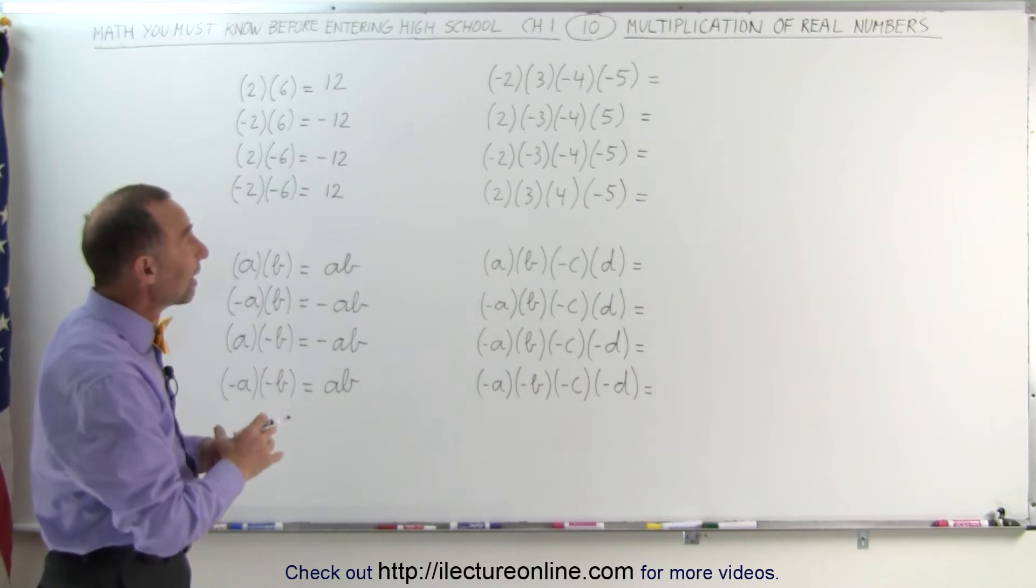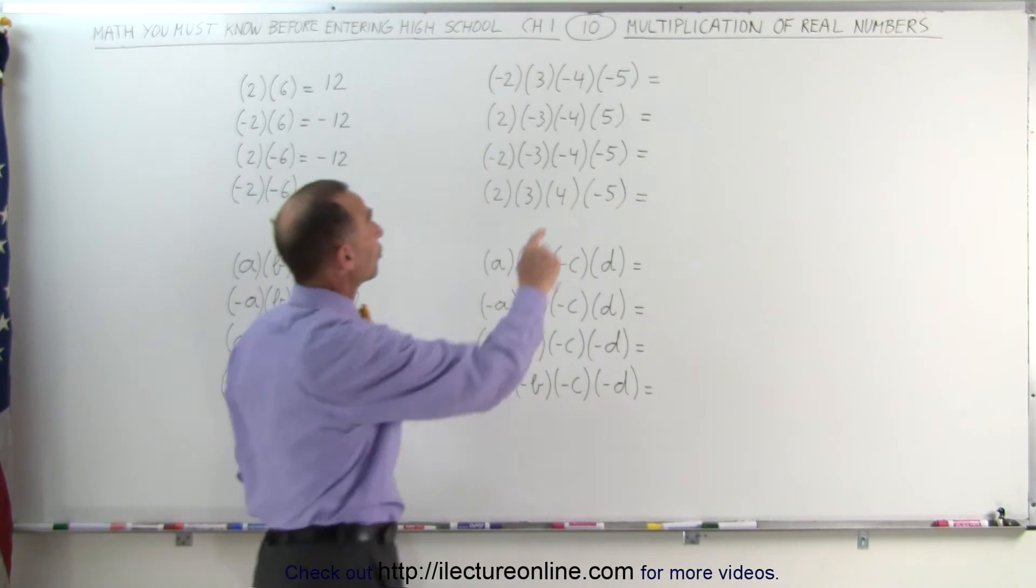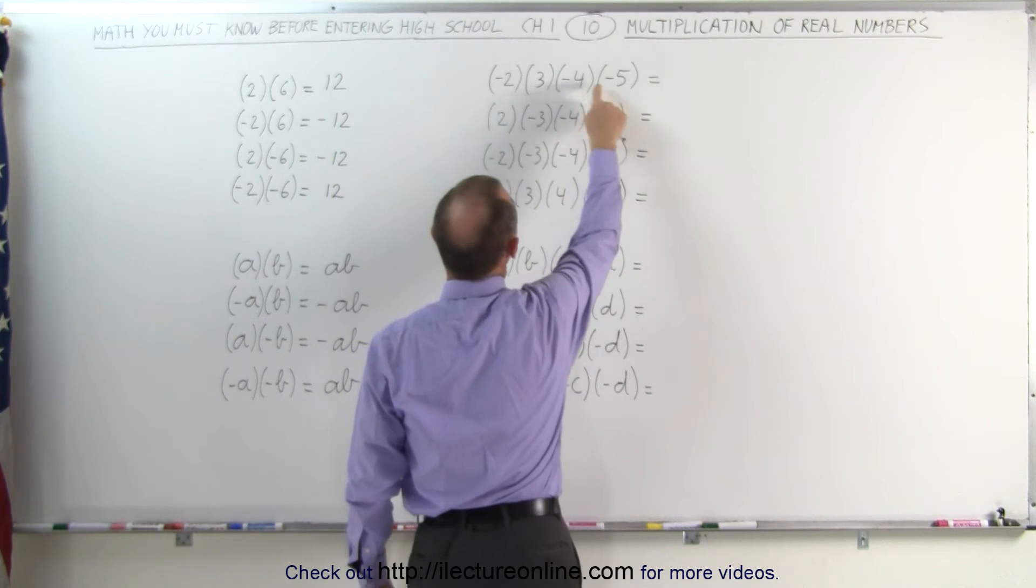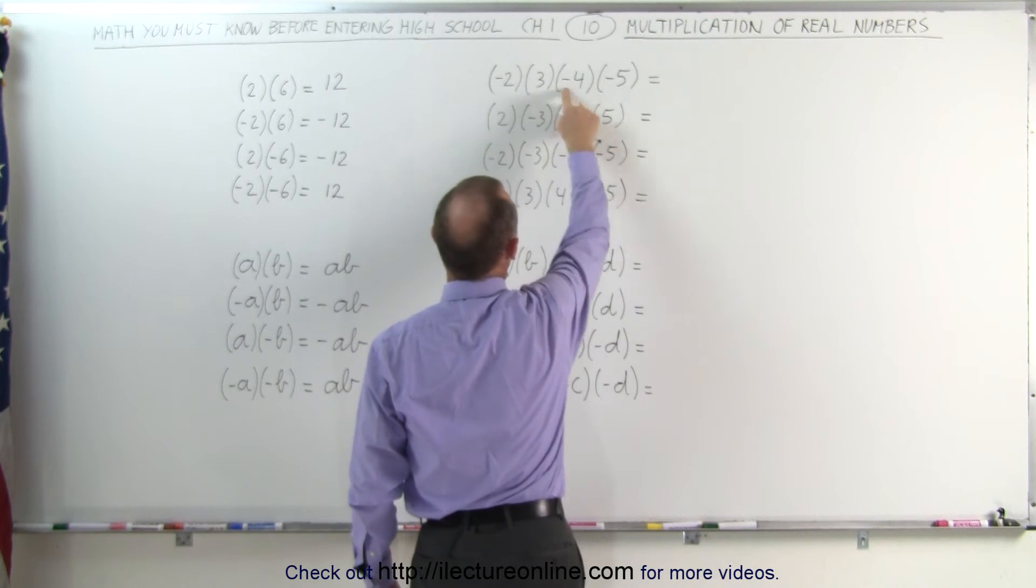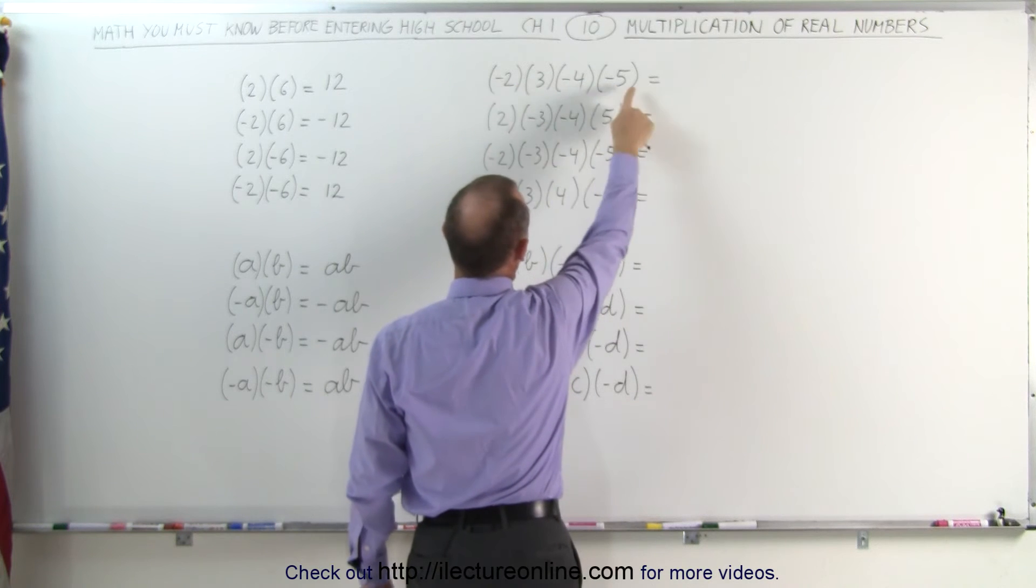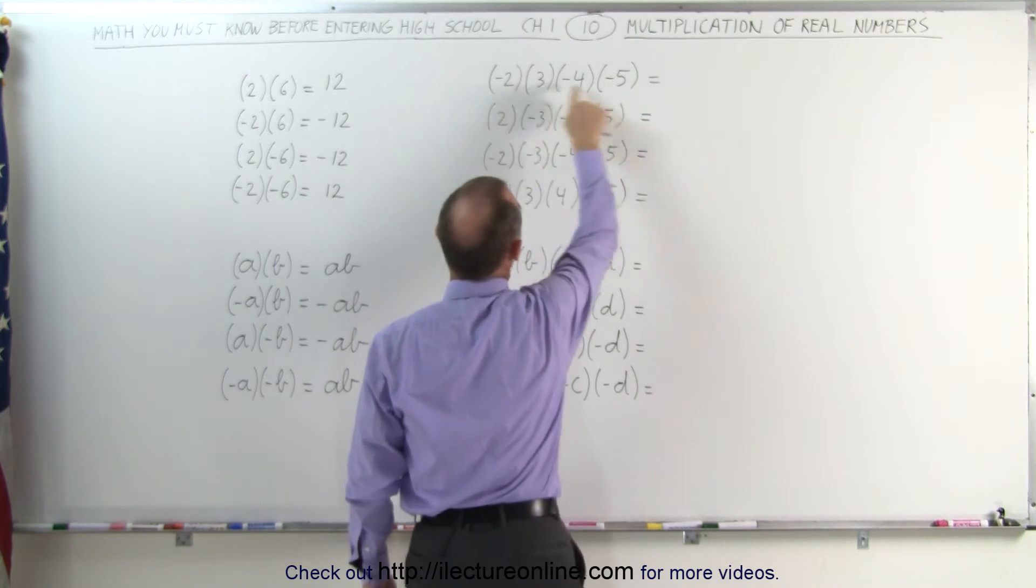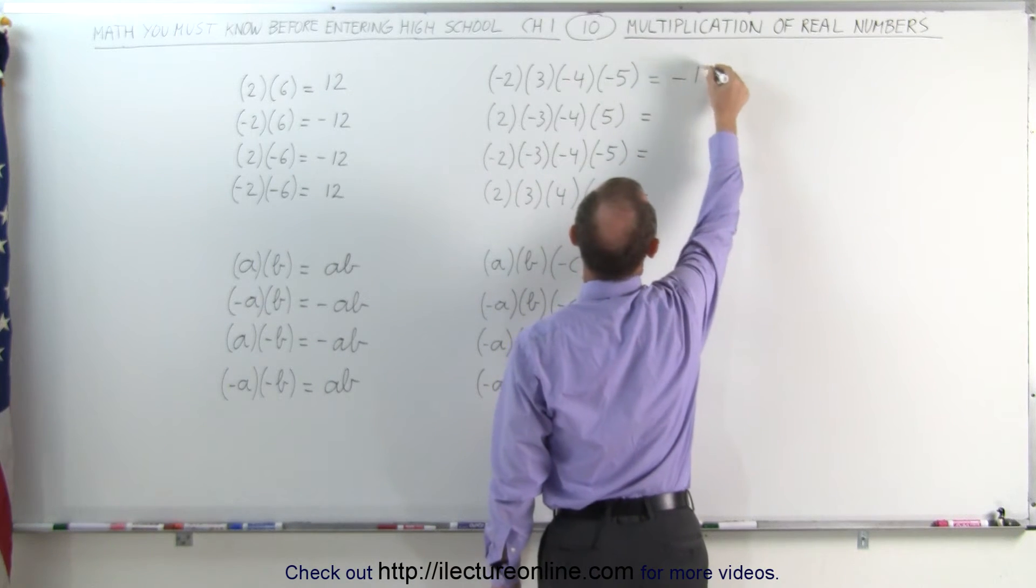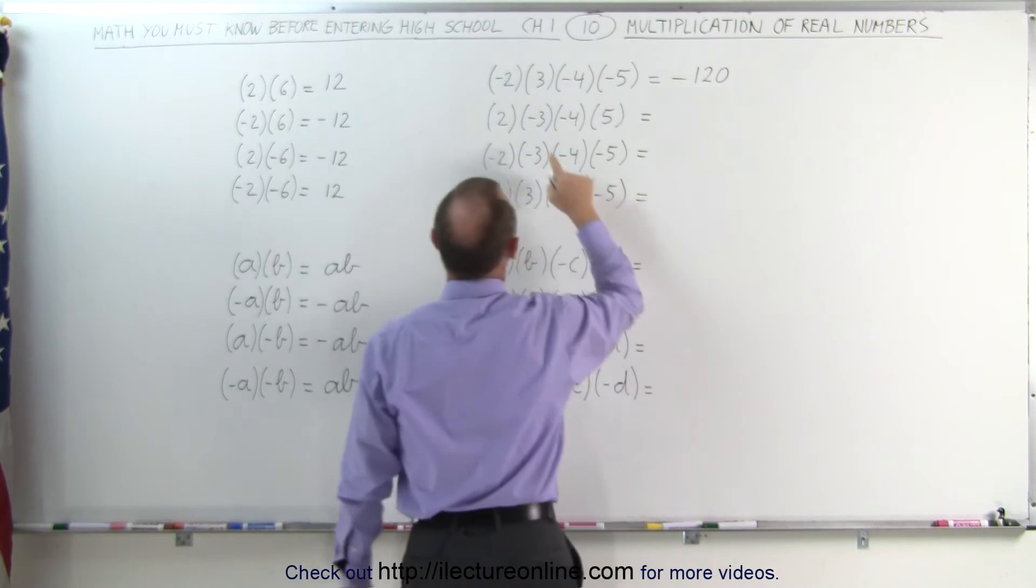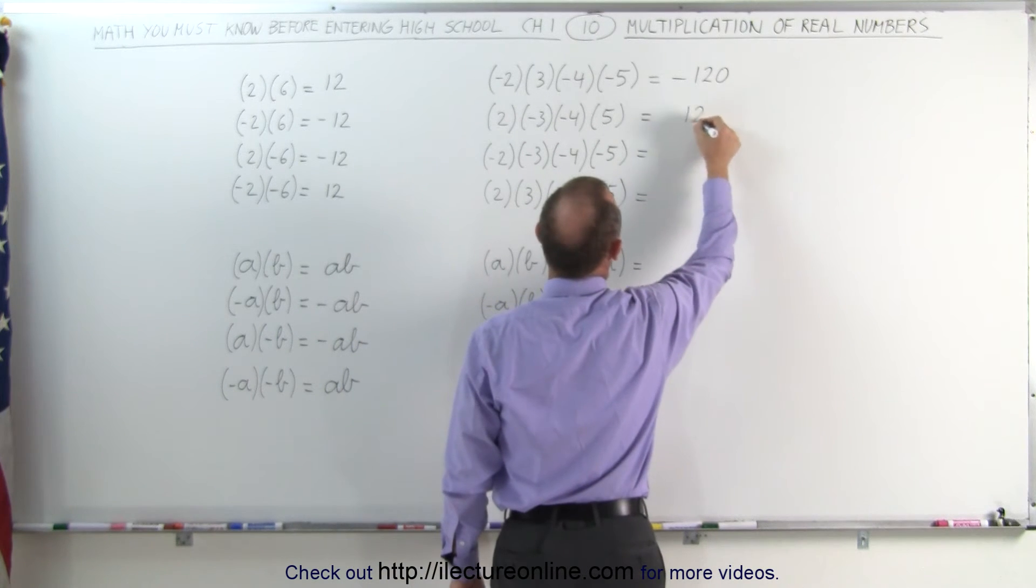Now let's take a look at this. Now we have four numbers. Notice on the first one here, we have three negatives. When the number of negatives is odd, in this case, three is an odd number, we multiply this together. 2 times 3 times 4 times 5 is 120. Three negatives means negative 120. If two of them are negative, that makes that a positive 120.